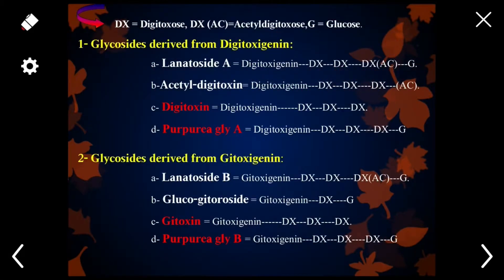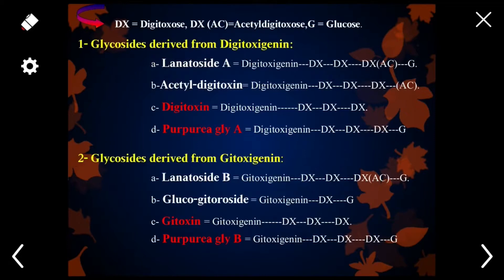These are simple representations of structures in the form of abbreviations. If you want to make lanatoside A, first you draw the structure of digitoxigenin. Here, 'Dx' stands for digitoxose. To draw lanatoside A, you start with digitoxigenin and then attach at carbon number 3 two molecules of digitoxose, one molecule of acetyl digitoxose, and one molecule of glucose. By joining these sugar molecules to the aglycone portion, you can make lanatoside A.